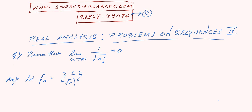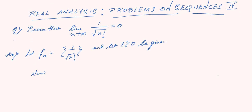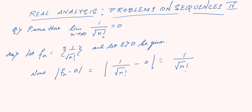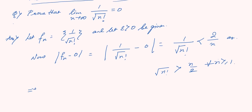Let epsilon be greater than 0 be given. Now, |f(n) - 0| equals 1 by root over n factorial, which equals 1 by root of n factorial itself. We can say that this is less than 2 by n, as the n-th root of n factorial is greater than n by 2 for all n greater than or equal to 1.